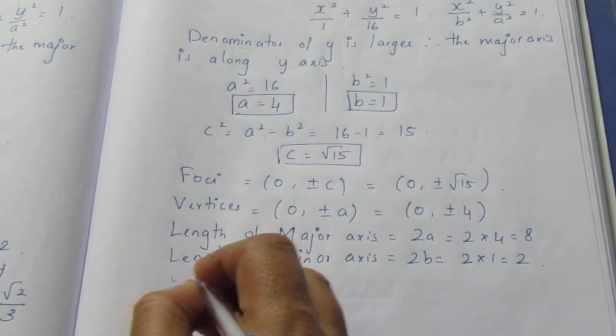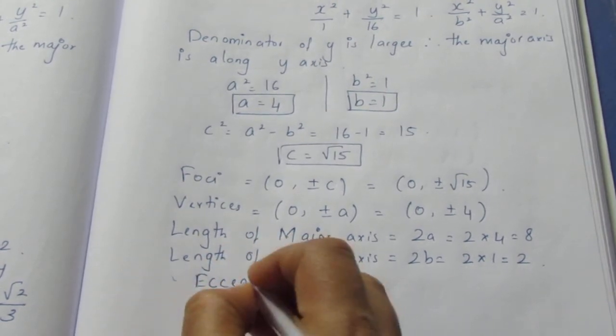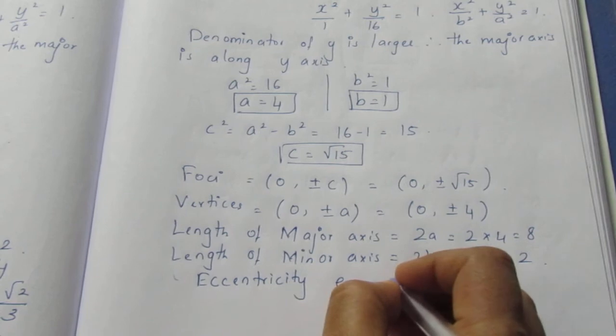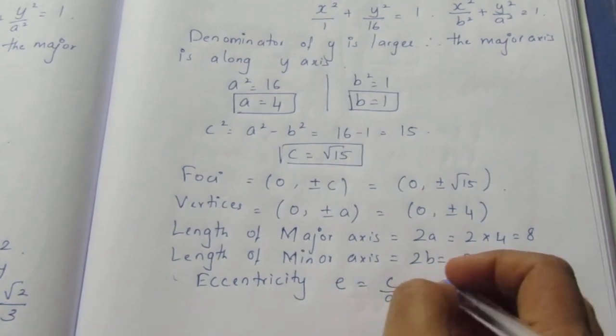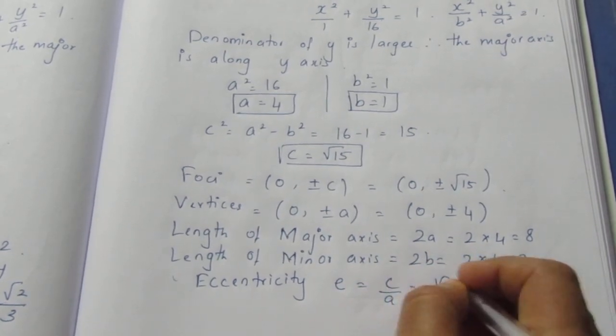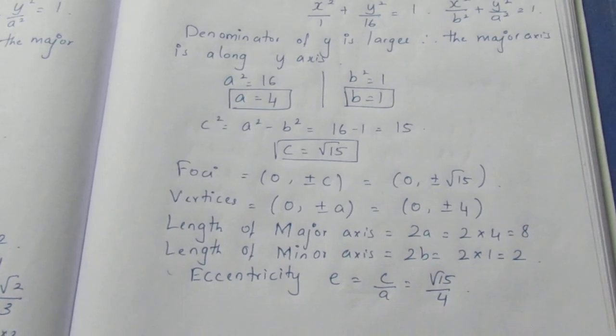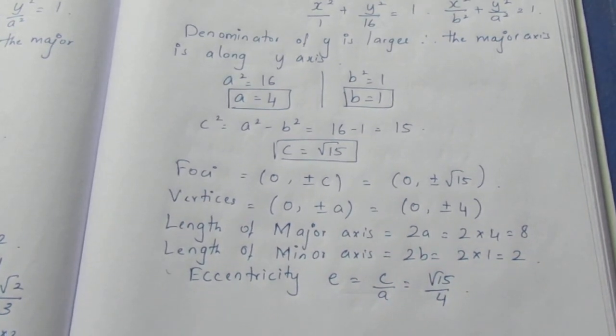Now eccentricity is equal to c/a. So c is √15, a is 4. We can't simplify it, so leave it as √15/4.